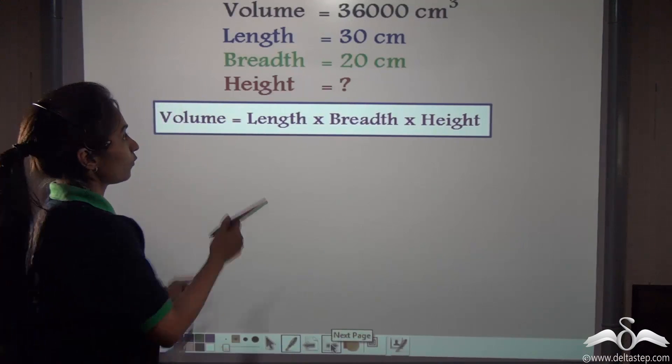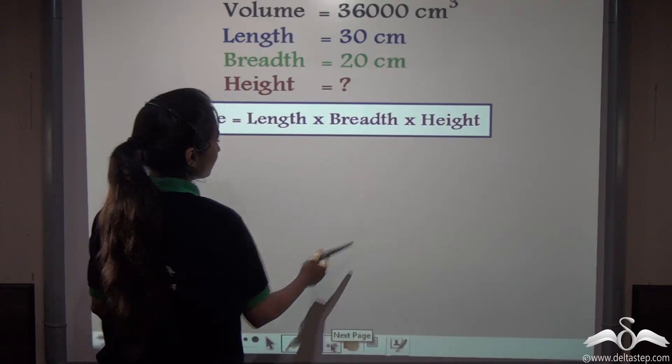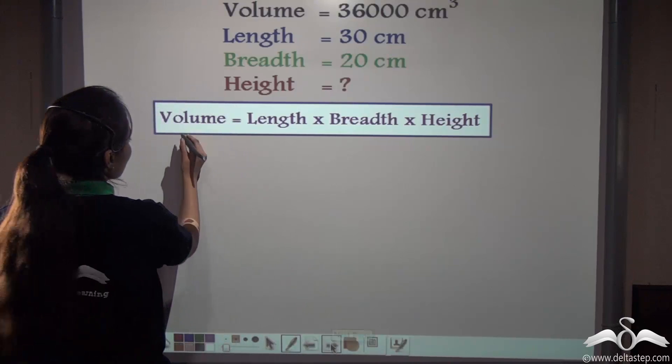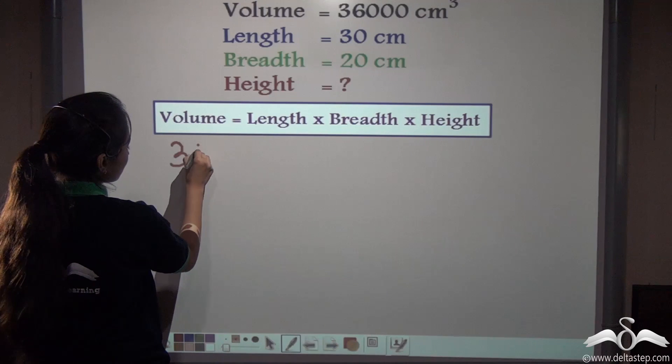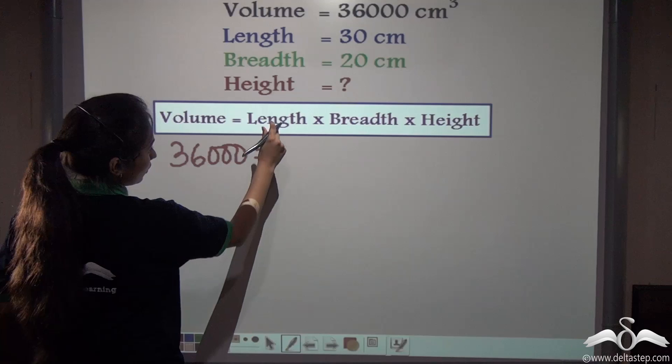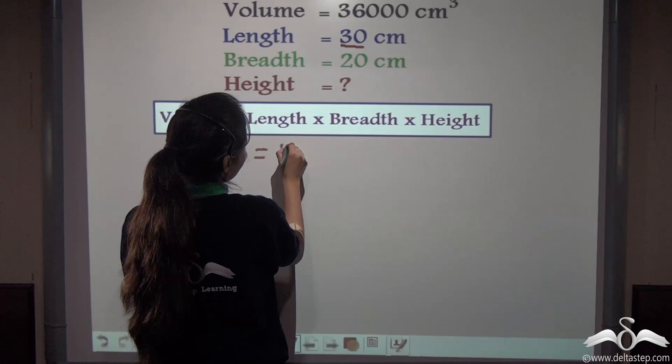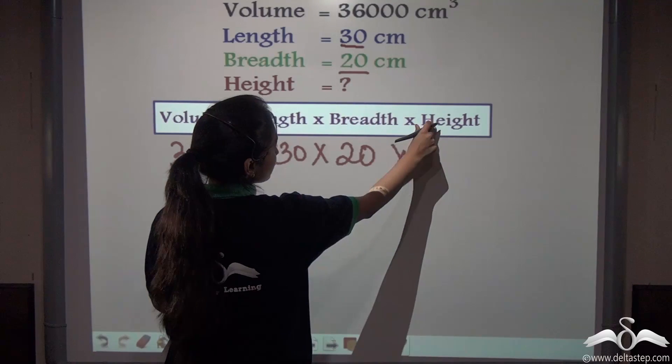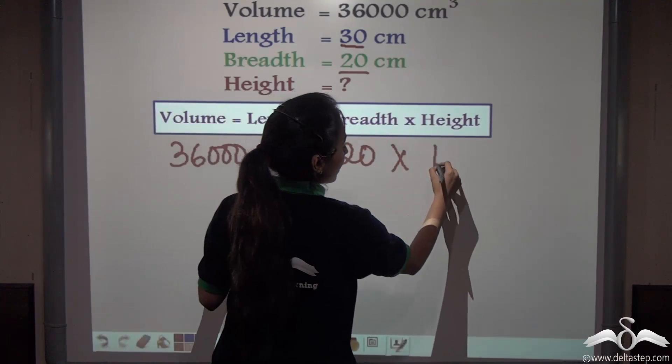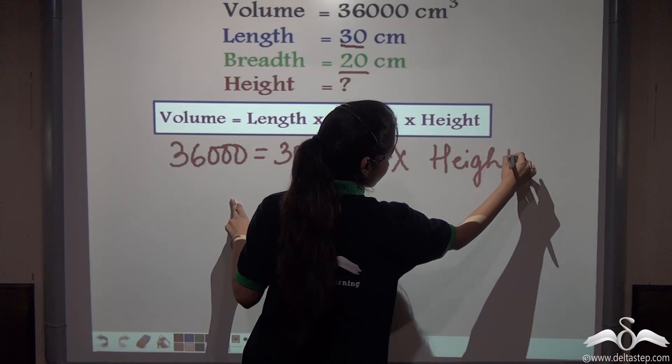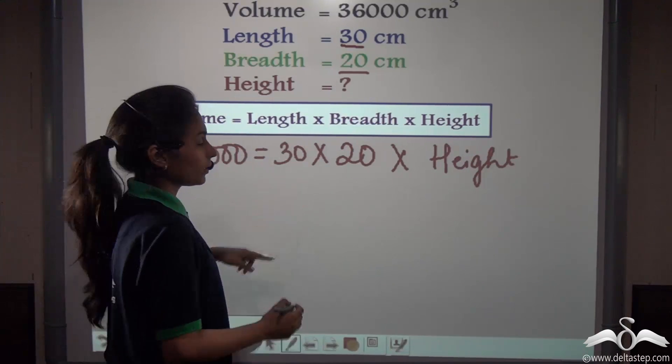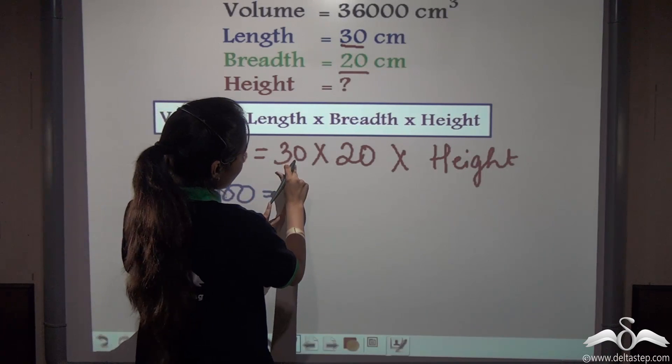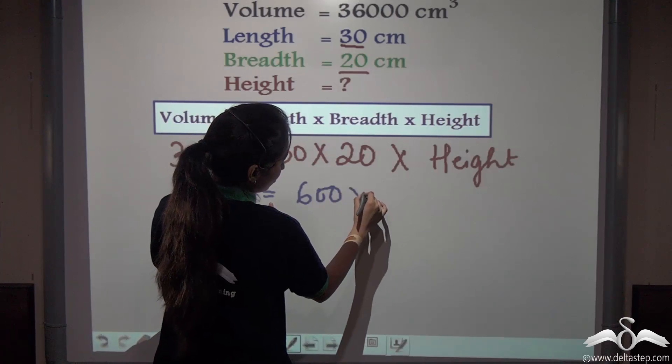We know that volume is length into breadth into height. So if I substitute each value below it, let's see what do I get. So volume 36,000 is equal to length—instead of length we will write 30 into, instead of breadth I will write 20. Height is not known, so let's write it as height only. Now let us multiply. So 36,000 gives me 30 into 20, 600 into height of the CPU.